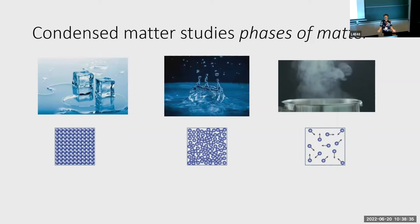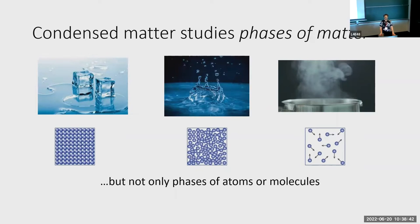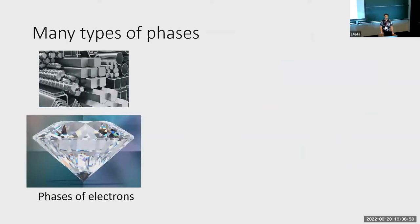You might say, okay, we understand solids, liquids, and gases — what is left for us to study? The key thing is that in condensed matter physics, we often study phases of matter which are not just phases of atoms or molecules. We can study phases of other objects. For example, we can consider the phases of an electron in a material. In a metal, the electrons are free to move and slosh around and behave much like a liquid, whereas in an insulator like diamond, the electrons are frozen in place and don't move very much — behaving much more like a solid. By considering phases of things other than atoms or molecules, we get new ideas like metals and insulators.